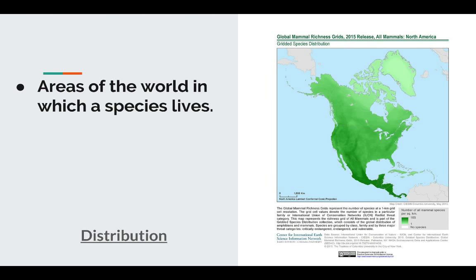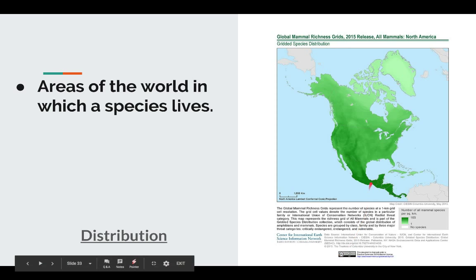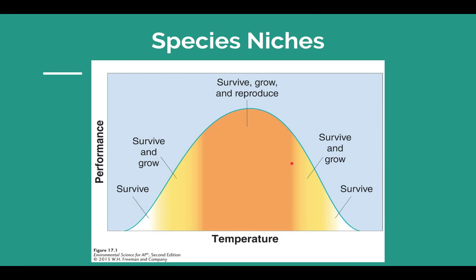Taking that realized niche, we can see the distribution of species. We know the fundamental abiotic necessities an organism needs, and then we include the biotic competition, and we get our distribution. For example, a map on the right shows the distribution of mammals in North America, which takes into account the ability to grow and compete — essentially reflecting that range of tolerance.